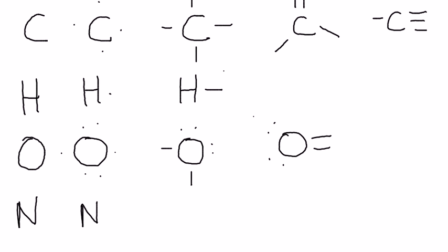Nitrogen has five valence electrons, and it likes to have three bonds with it. So it can have three single bonds, it can have one double bond and one single bond, or it can have one triple bond.